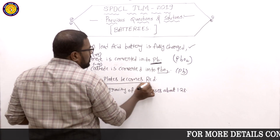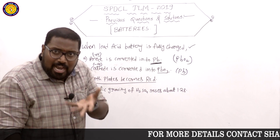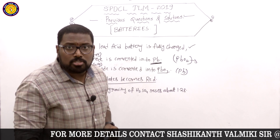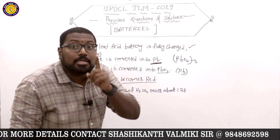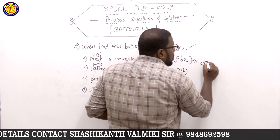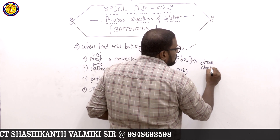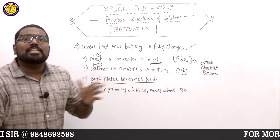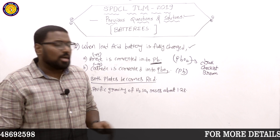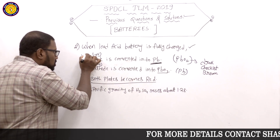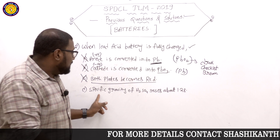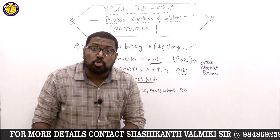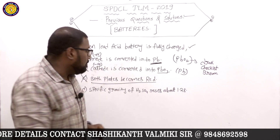Third option: both plates become red — that is not correct. PbO2 is dark chocolate brown in color, not red. So that option is wrong. The correct answer is: specific gravity of H2SO4 rises to about 1.28. This is a very, very important answer.